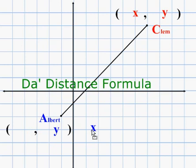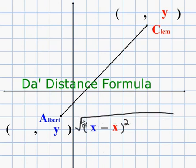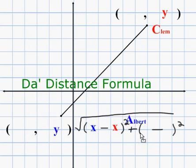You take your x's over there, you're going to subtract them, then you're going to square them. You're going to put your hangy thingy there — the hangy thingy is the square root sign. We're going to add the same thing to the y's, and what we have you there.